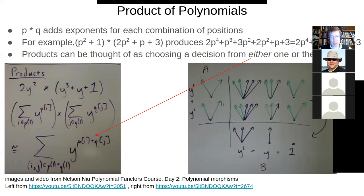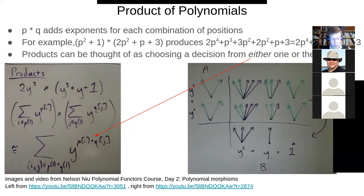Tensor product of polynomials gets the coefficients multiplied and the exponents multiplied as well. That will be like parallel composition — we take Alice's decision paired with Bob's decision, considering both of them. You may remember tensor product featured prominently in wiring diagrams: one diagram in parallel with another, giving us the product of their choices — Alice has her options, Bob has his, and we have every combination.